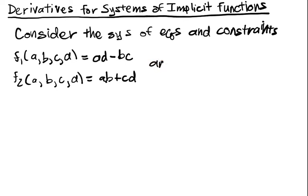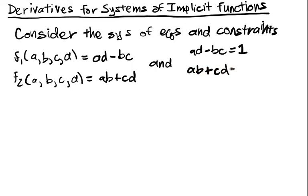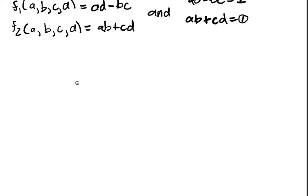The constraints we're going to put on this are: ad − bc = 1, so the determinant is 1, and ab + cd = 0, meaning the columns are orthogonal or perpendicular to each other. Two interesting constraints for a particular matrix.